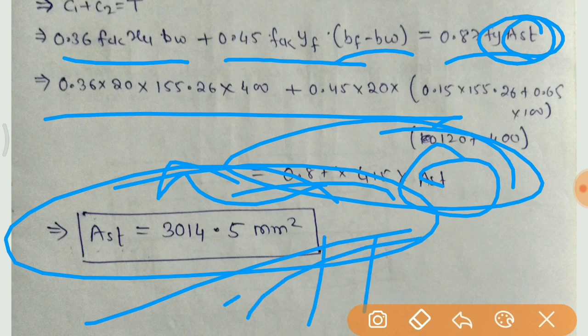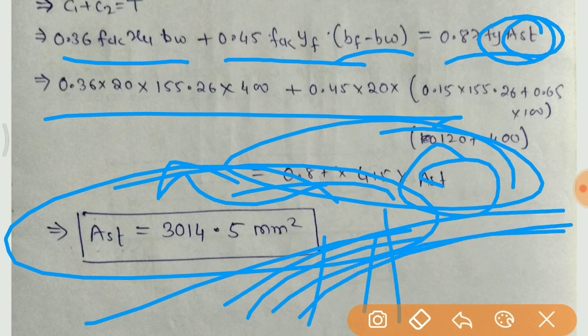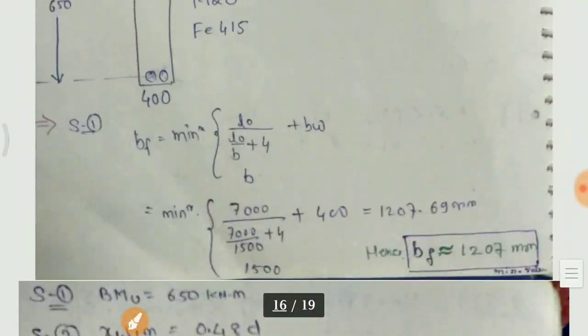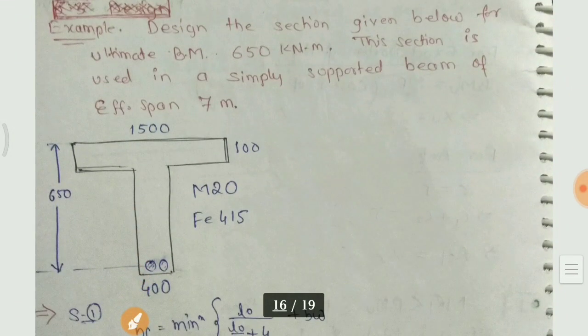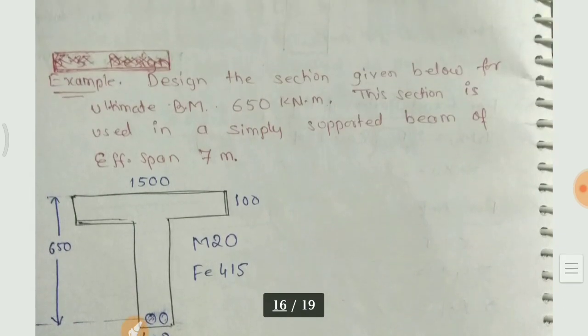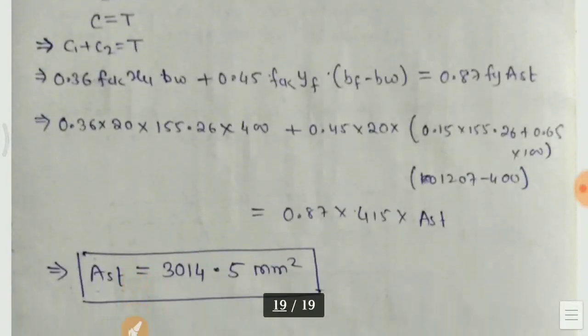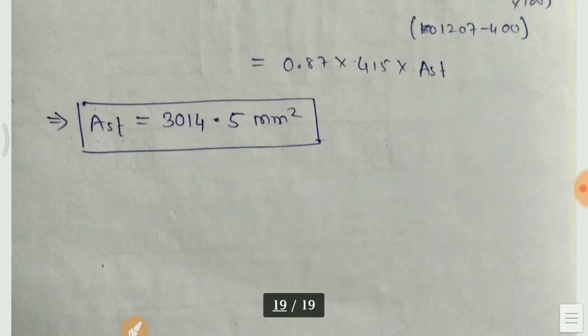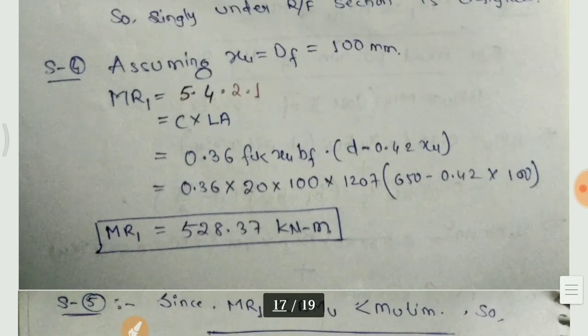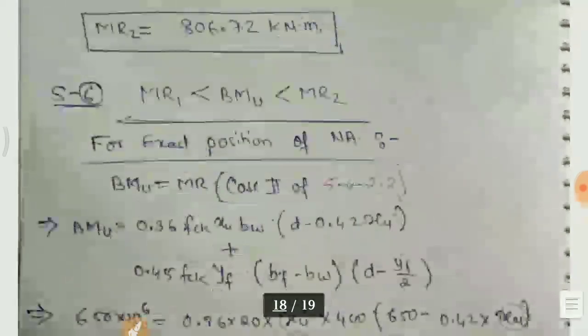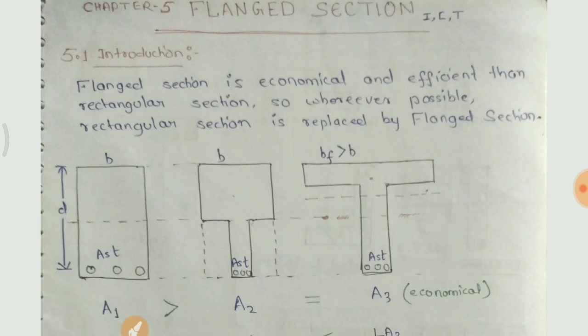xu निकाल लिया — अब कितने bars provide करने हैं calculate करेंगे। इस question में bars दिए नहीं हैं, तो निकाल लो जैसे Unit 3/4 में single reinforced में बताया था। Bars निकाल लेंगे और इस तरह से flange section design complete हो जाएगा।